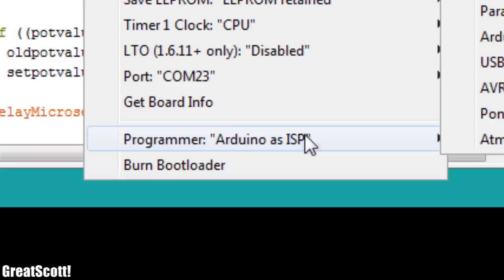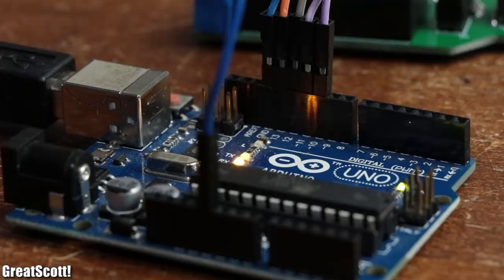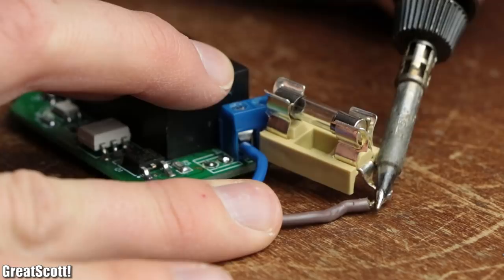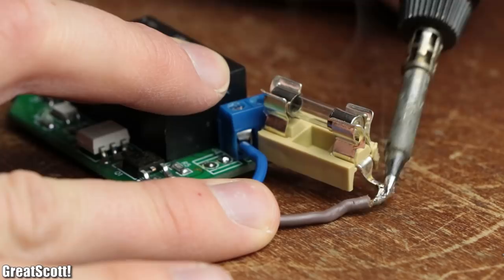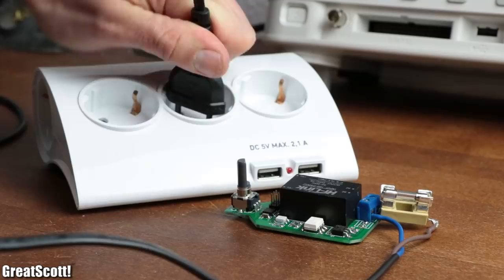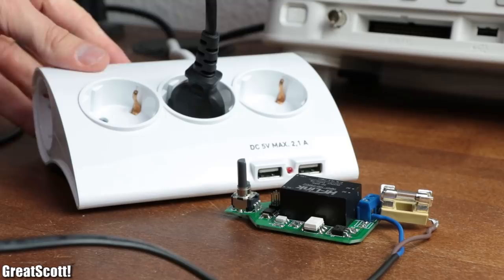And after burning the bootloader to the ATtiny and uploading the code, it was time to connect the mains voltage wires for which I also added a fuse in series for safety reasons.